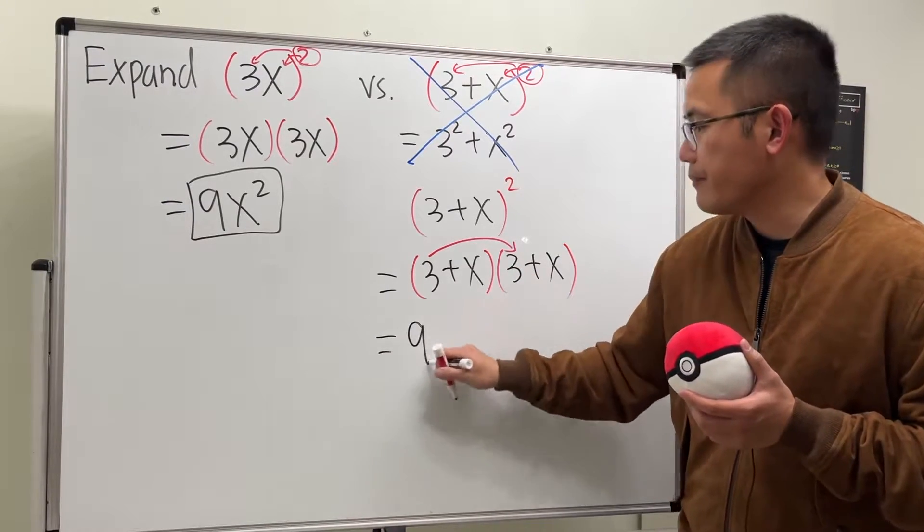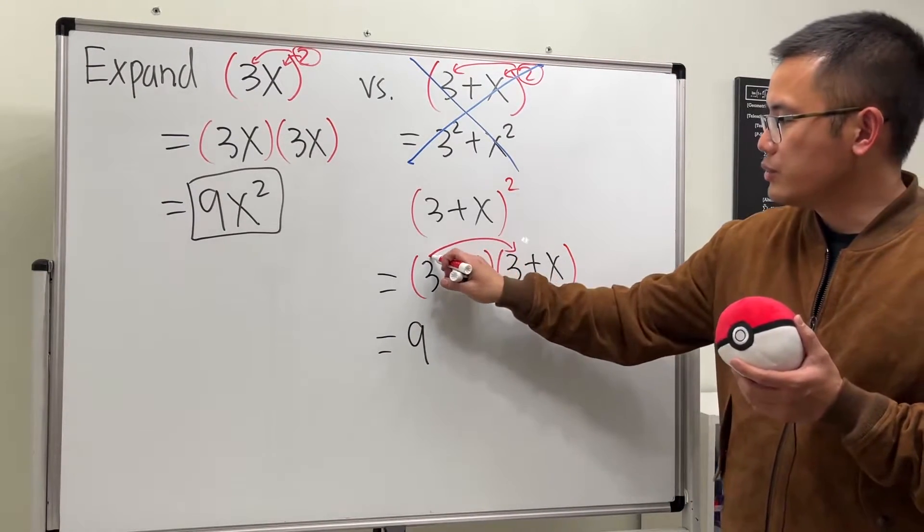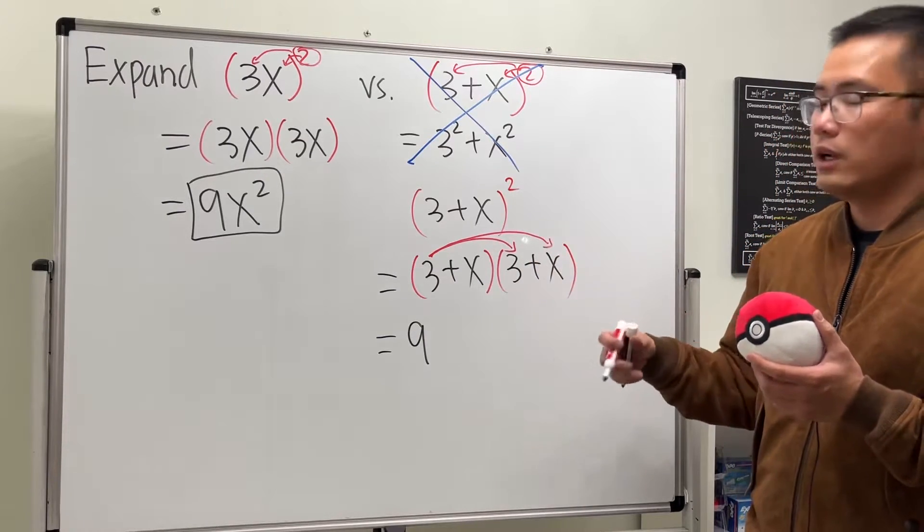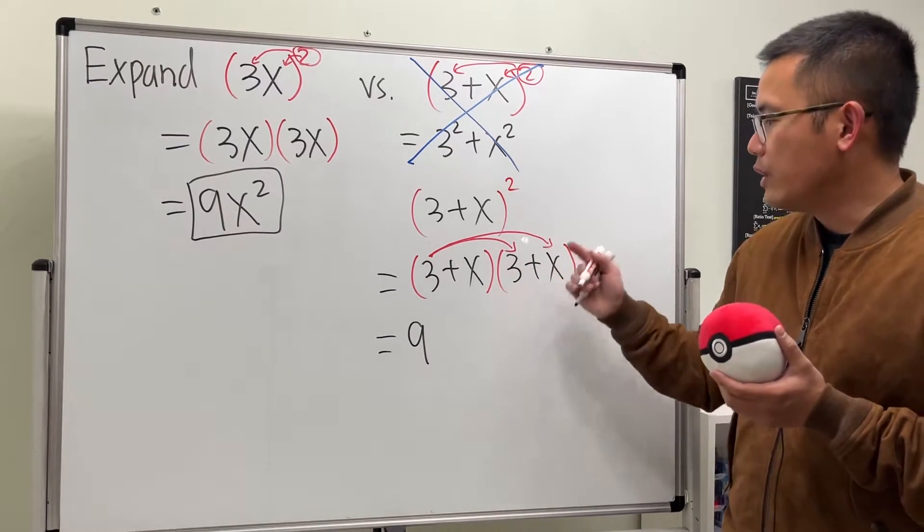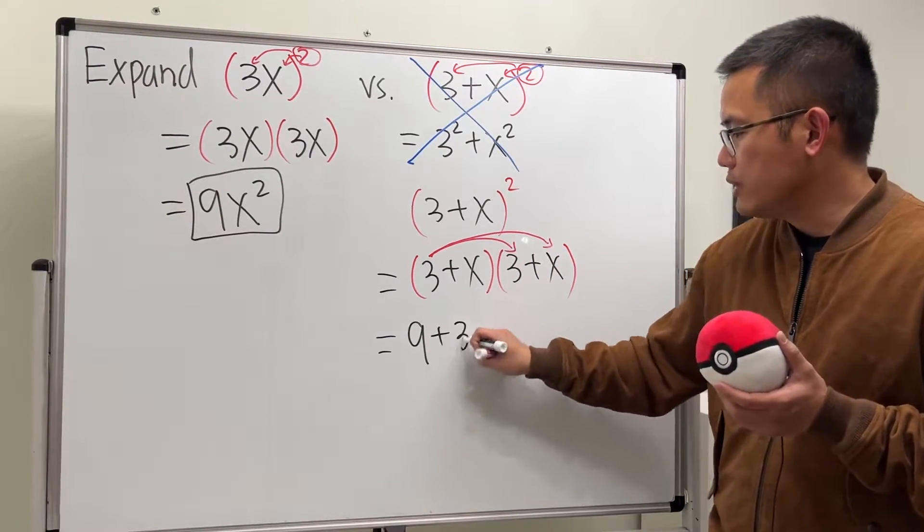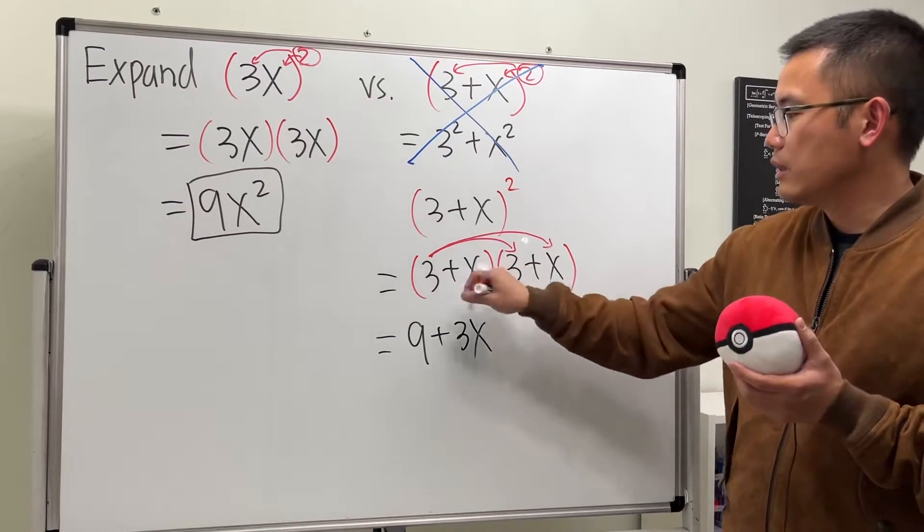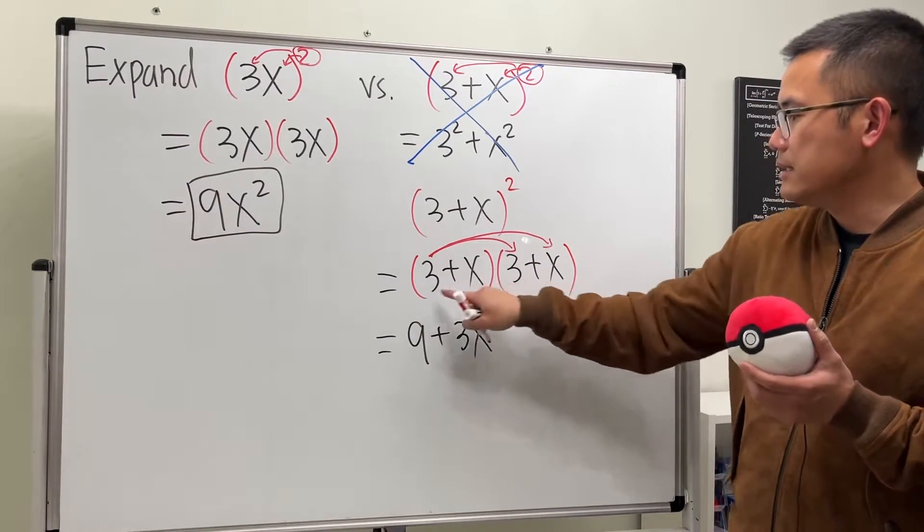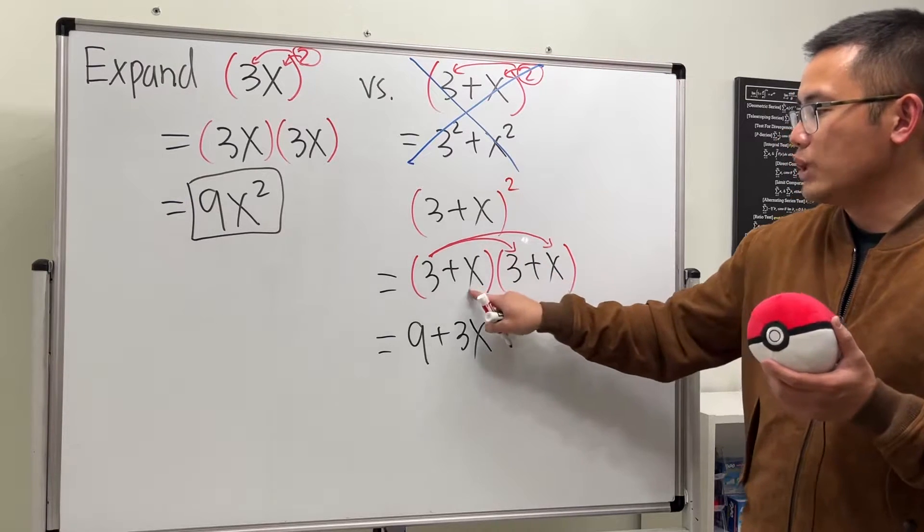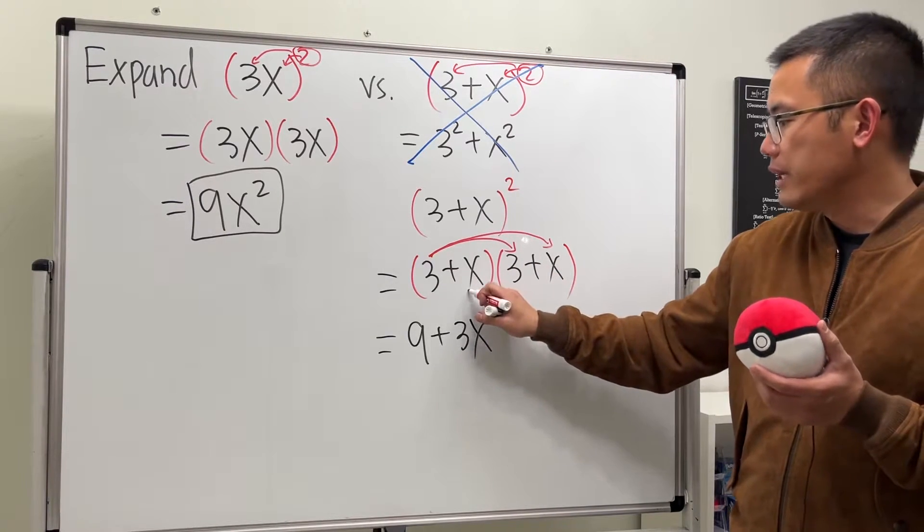But let me show you how we FOIL it. So you first take the 3, you multiply by the 3. 3 times 3 is 9, which is just 9. Next, you take the 3, you multiply with the x, and that will give us 3x, and we have to add them up, so we add 3x.